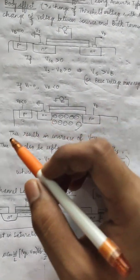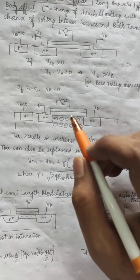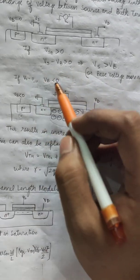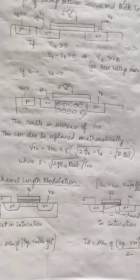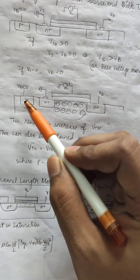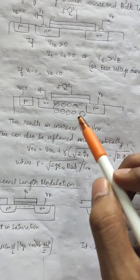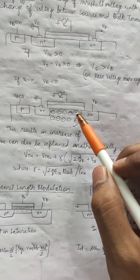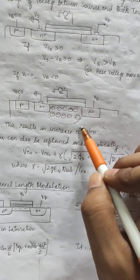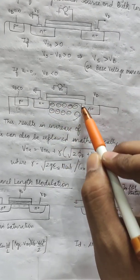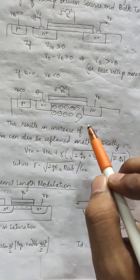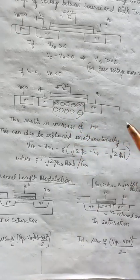Now let us see how this happens. Suppose VS is equal to zero and VB is less than zero. In such a case, this bulk terminal will attract all the positive charges, leaving behind negative charges in this region. This results in the increased size of the depletion region as more negative charges get accumulated, which in turn results in the increase of the threshold voltage.